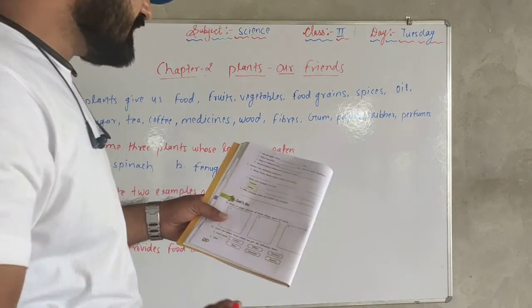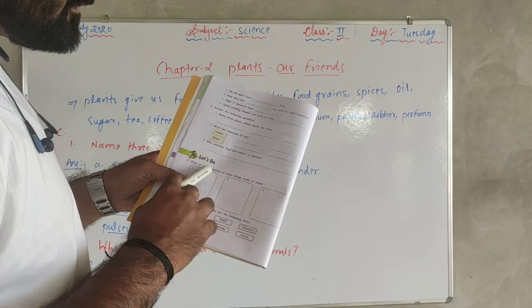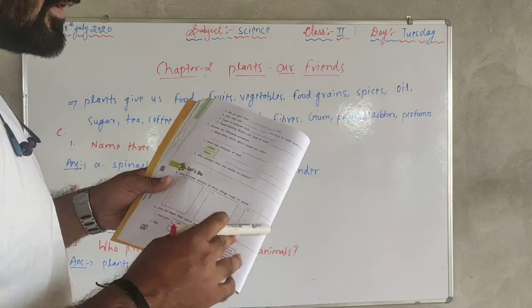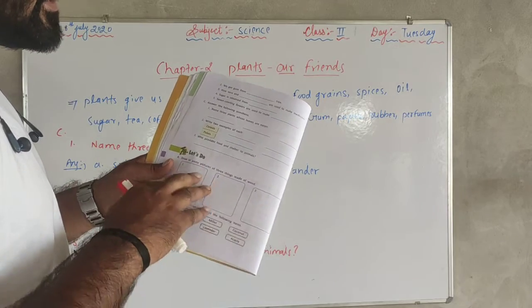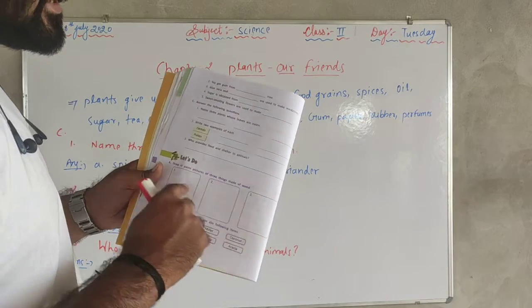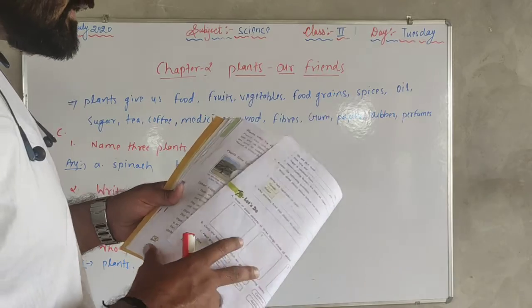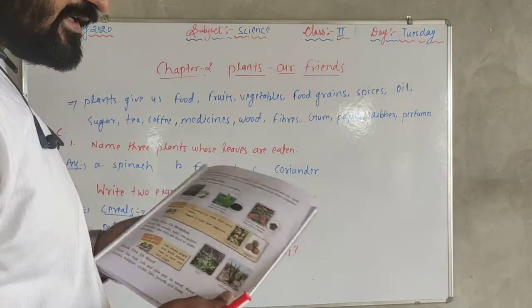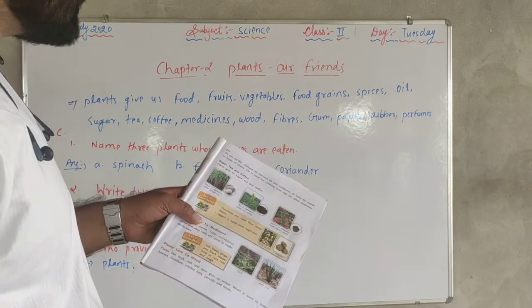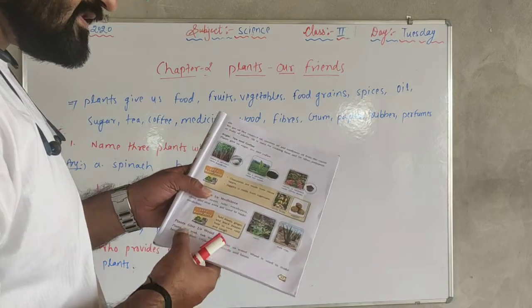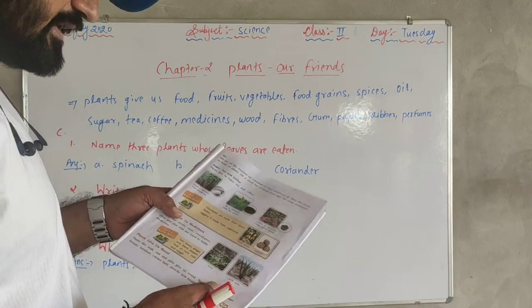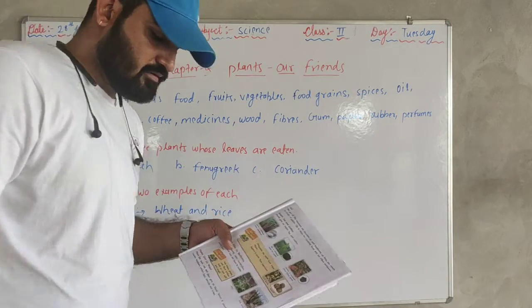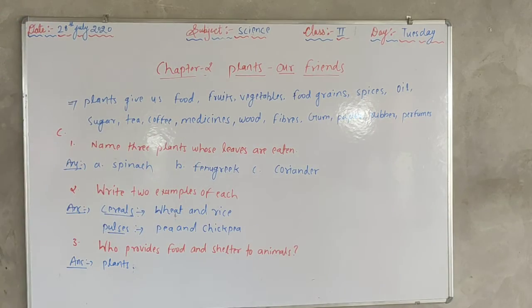Next question: draw or paste pictures of three things made of wood. Things made of wood include houses, furniture, and items like pencils.